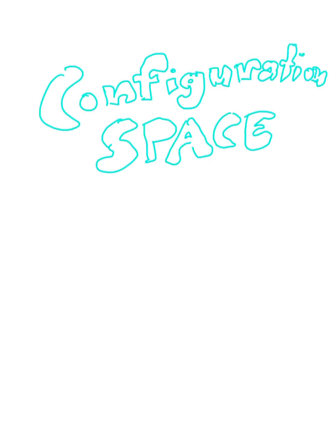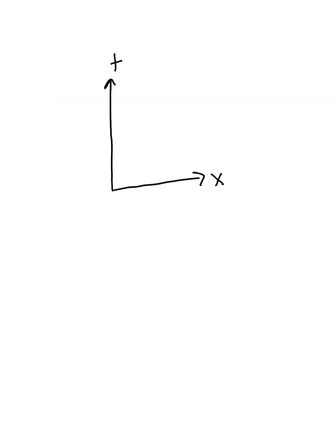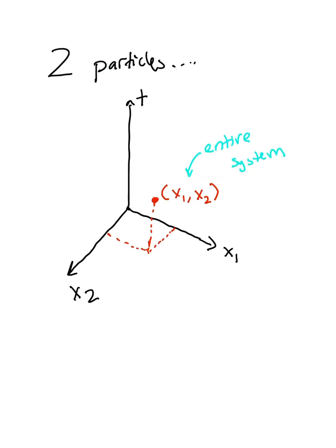Instead of using just one axis for position in general, we can use one position axis for each particle. So if our system contains two particles, we will have one axis for one particle, and another axis for another particle.